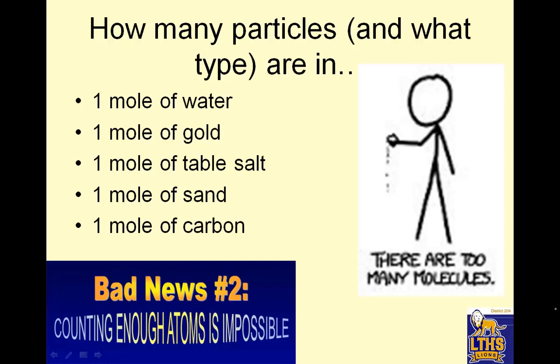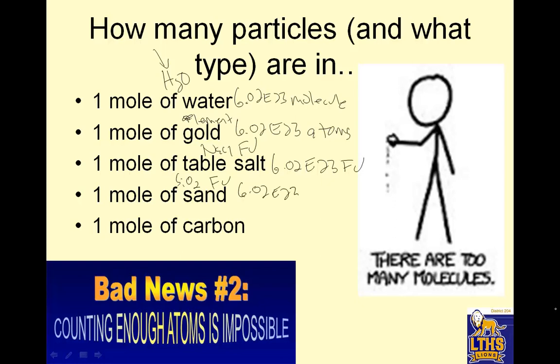How many particles and what type are in one mole of water? 6.02 E23 particles, but water is H2O. Because it starts with a non-metal, it's a molecule. One mole of gold, gold is an element, so elements are atoms. Table salt is NaCl, which is a formula unit, 6.02 E23 formula units. One mole of sand, sand is SiO2, which is a metal and non-metal, so it is a formula unit, 6.02 E23. And one mole of carbon, which is an atom, 6.02 E23.